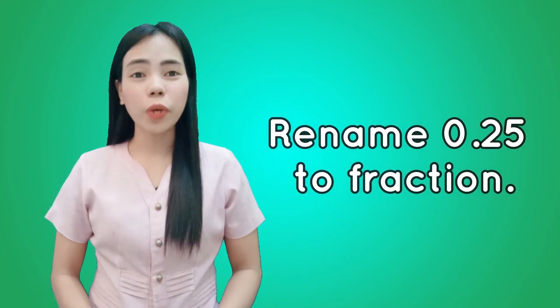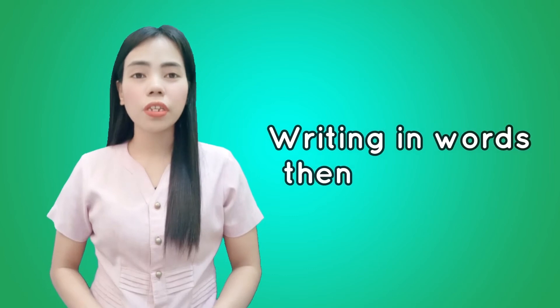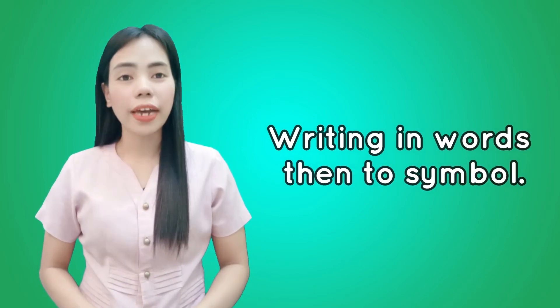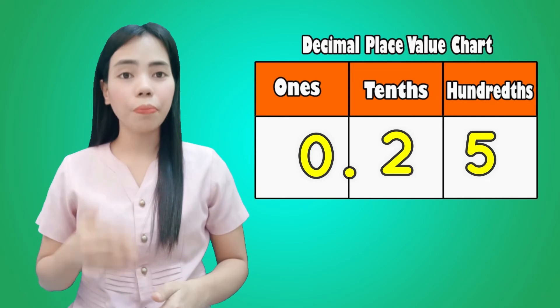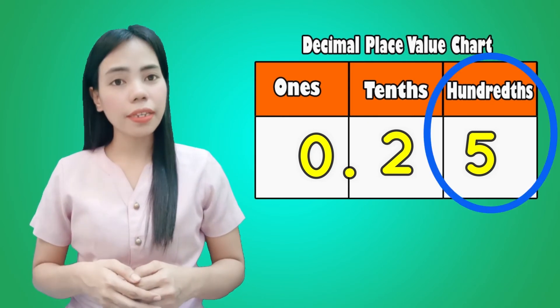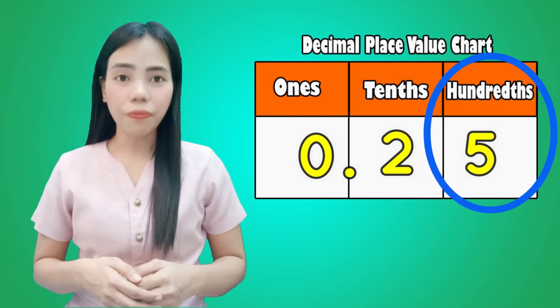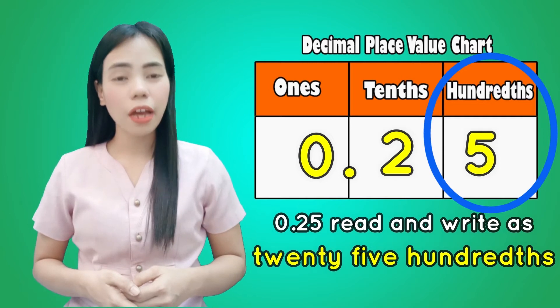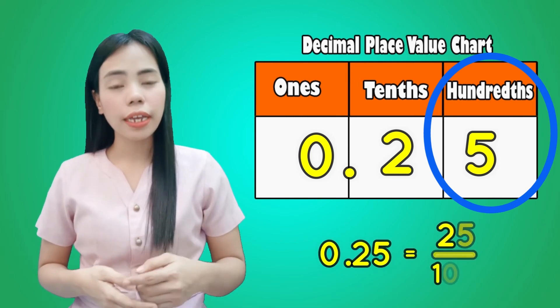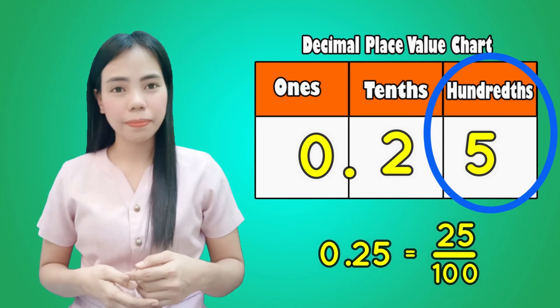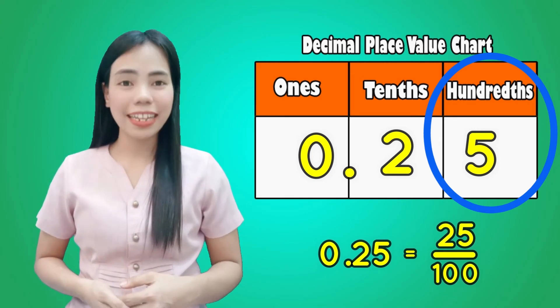Let's have another example. Rename 0.25 to a fraction. We can rename 0.25 through the strategy of writing in words then to symbol. Write the number in a decimal place value chart. The last digit to the right of the decimal point is 5, and 5 is in the hundredths place. Therefore, read and write 0.25 as 25 hundredths. In fraction form, 25 will be the numerator and 100 as the denominator. Thus, we have 25 hundredths in fraction form.